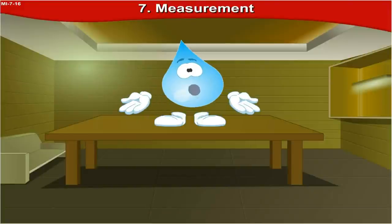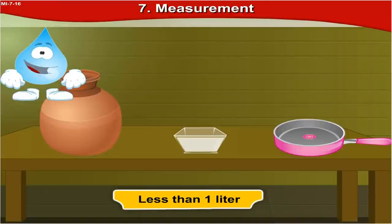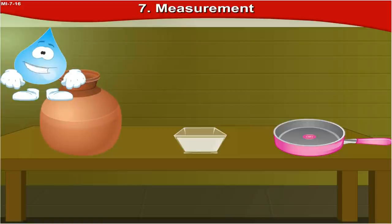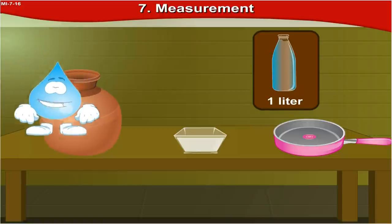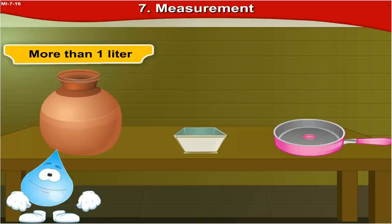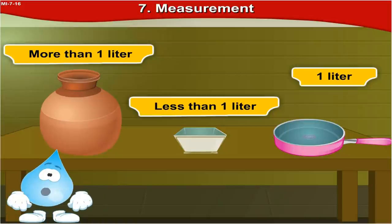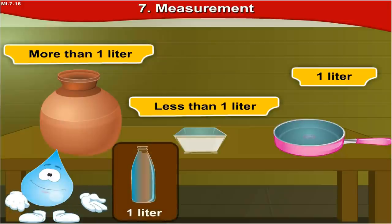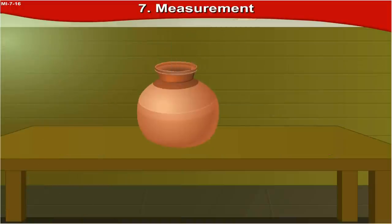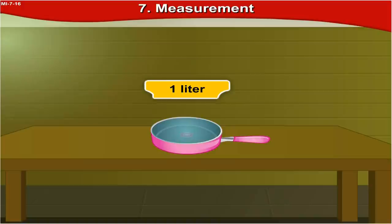Take various vessels such as a pitcher, a box, a pan, and make an estimate of how much water they can hold — 1 litre, less than 1 litre, or more than 1 litre. Verify your guess by actually using a 1 litre bottle. The pitcher can hold more than 1 litre, this box can hold less than 1 litre, and this pan can hold 1 litre of water. Checking with the bottle: the pitcher holds 5 litres, the box holds half a litre, and the pan holds 1 litre of water.